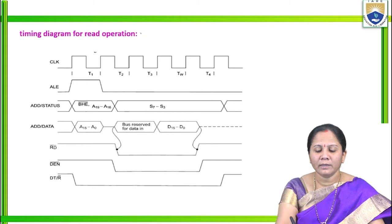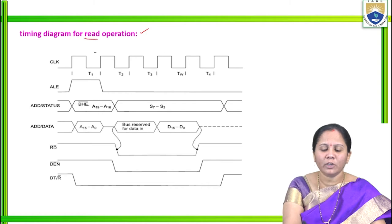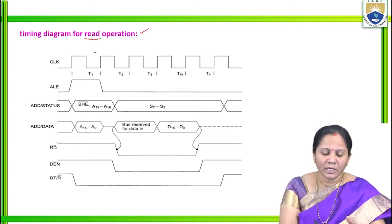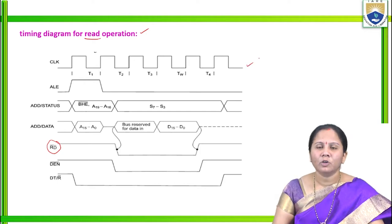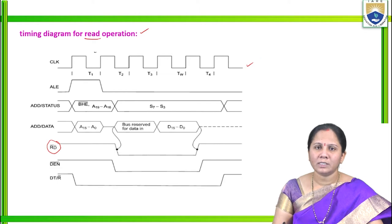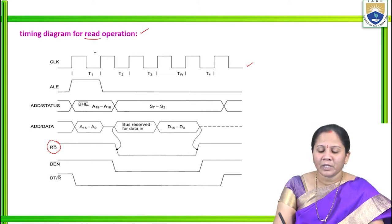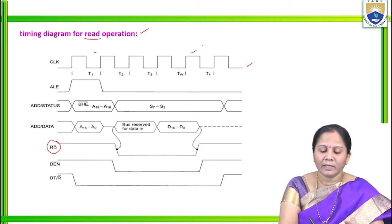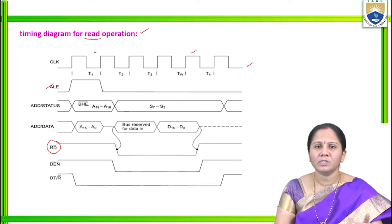They are also asking to draw the timing diagram for the read operation. One machine cycle consists of four T states: T1, T2, T3, and T4. Weight states can be inserted before T4. First, we draw the clock signal with four T states. Next, we draw the ALE (address latch enable) signal, which is enabled only during T1 because the address is sent only at T1; in remaining time cycles it will be idle.